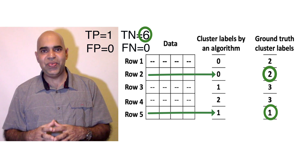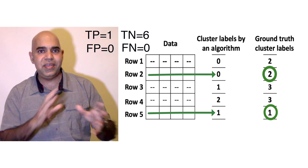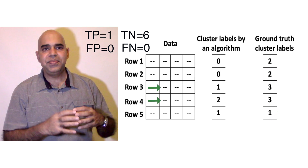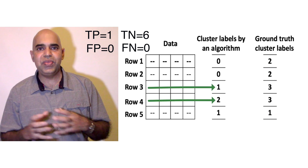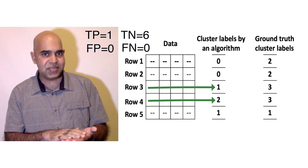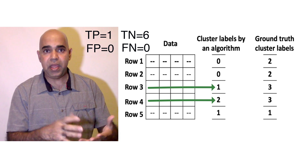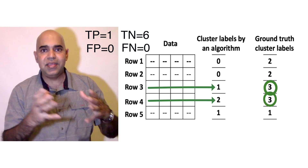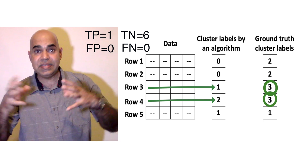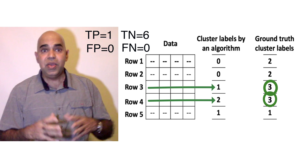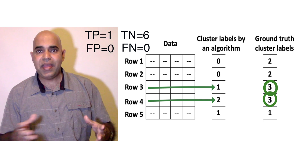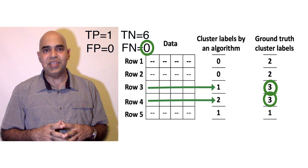A lot of true negative pairs. We are done with all pairs involving the second row. The third and fourth rows are from two different algorithmic clusters, so it is a negative pair. However, the third and fourth rows are from the same ground truth cluster, which is cluster 3. Hence, we have a false negative pair.